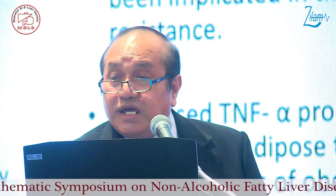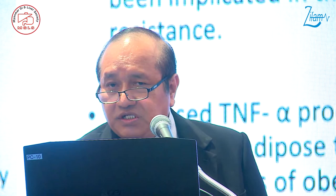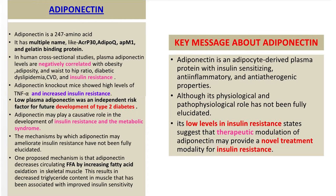Adipose tissue can also produce TNF-alpha, which is a pro-inflammatory cytokine that can lead to inflammation. In the liver, chronic inflammation leads to fibrosis, cirrhosis, and eventually HCC. There is also adiponectin, which negatively correlates with obesity. The regulatory mechanisms are dysfunctional in these fatty liver diseases.